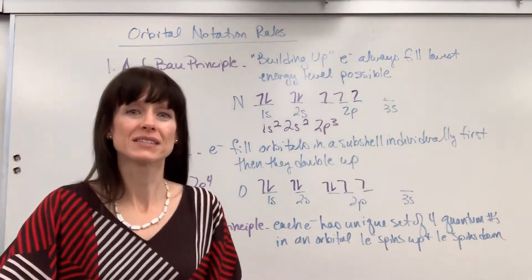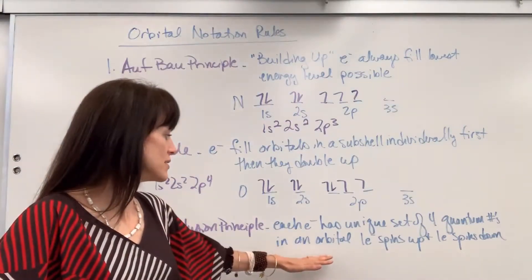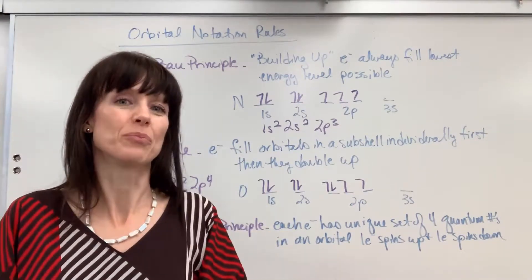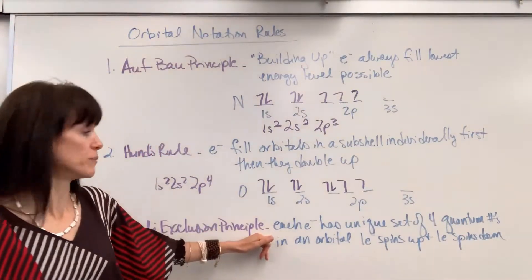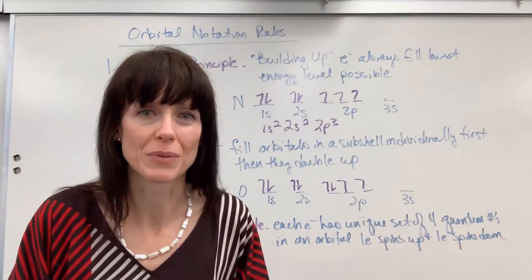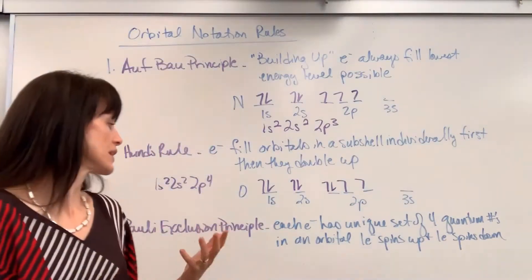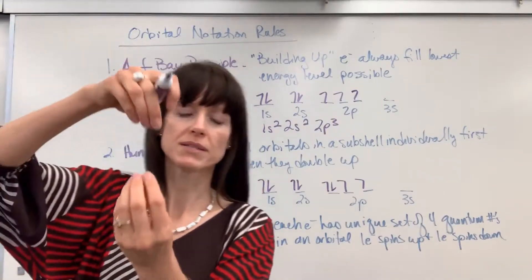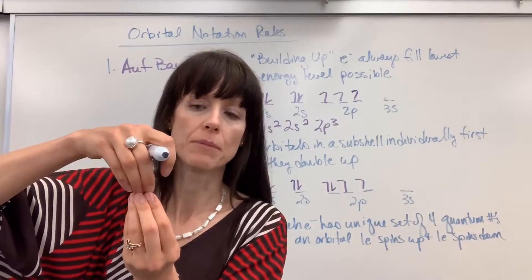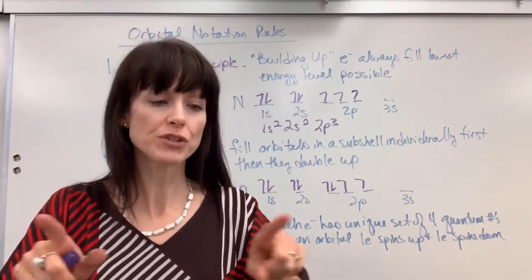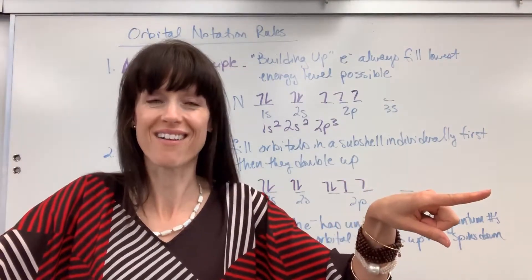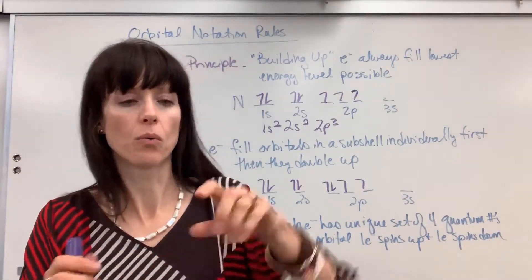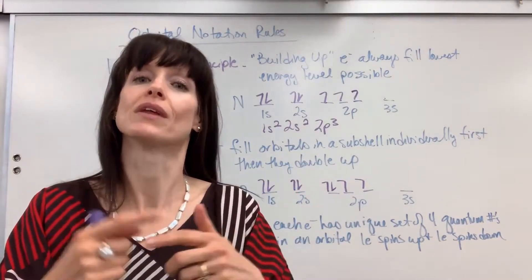The last rule is the Pauli Exclusion Principle. It has a very technical definition fitting into physical chemistry and quantum mechanics. The official definition is: each electron has a unique set of four quantum numbers. Here's the practical application: in an orbital, one electron spins up and one electron spins down. If we're on the y-axis for our p-dumbbell with two electrons — two negatives — they would repel like two negative magnets. The way they coexist is one spins up, one spins down, creating opposite magnetic fields so they don't repel one another.